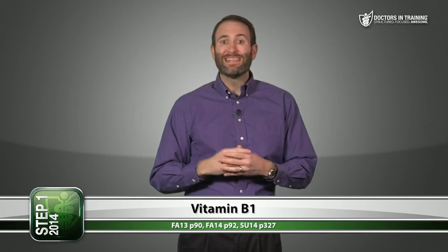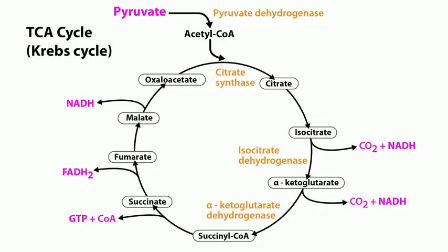First, vitamin B1, also known as thiamine. The active form of B1 is thiamine pyrophosphate, and it has a ton of important functions. From pyruvate to acetyl-CoA, catalyzed by pyruvate dehydrogenase — you need thiamine there. Alpha-ketoglutarate to succinyl-CoA, catalyzed by alpha-ketoglutarate dehydrogenase — again, you need thiamine there as well.